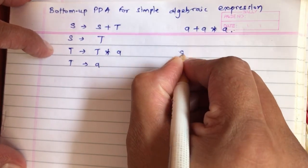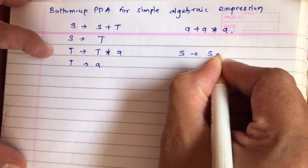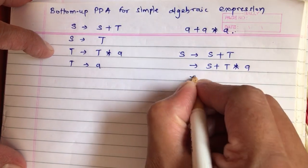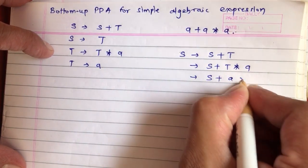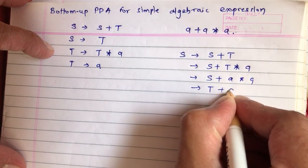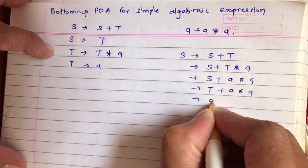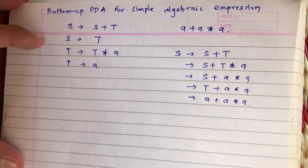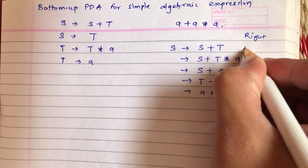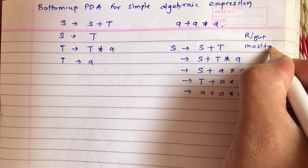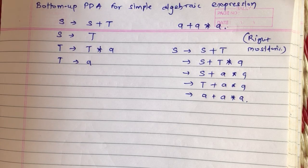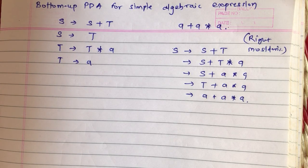Suppose you have a rightmost derivation like this: S gives S plus T, T gives T star A, then T gives A, S gives T, and again T gives A. This is a rightmost derivation. We need to construct a bottom-up PDA for this and solve its ID notation in bottom-up form.